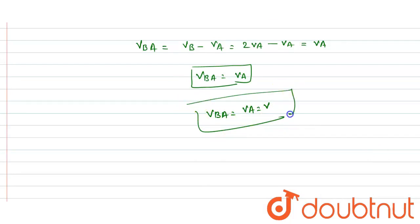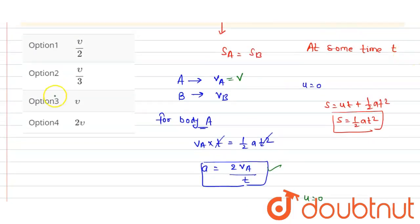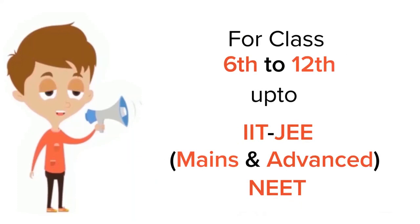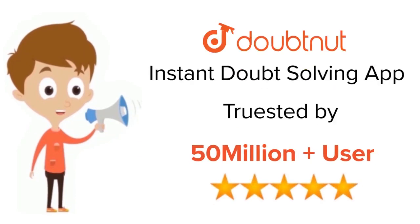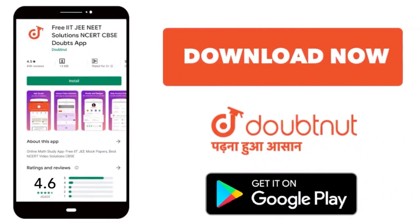The answer matches option three, so this is the right answer. I hope you understood. Thank you. For class 6 to 12, IIT and NEET level — trusted by more than 5 crore students. Download the DoubtNet app today.